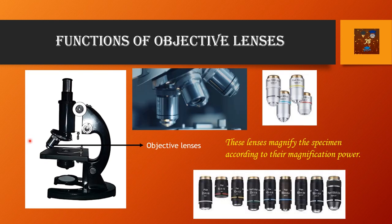Objective lenses: these are the objective lenses, attached with the revolving nosepiece. Usually there are three objective lenses — one is the low power objective lens, then the middle power objective lens, then the high power objective lens. These lenses magnify the specimen according to their magnification power. The low power objective lens is 10x and will magnify 10 times, then 40x, then 100x. All the powers are written on them.